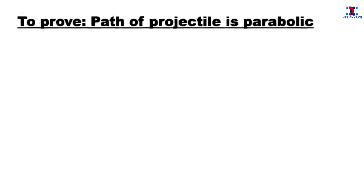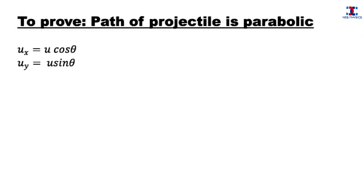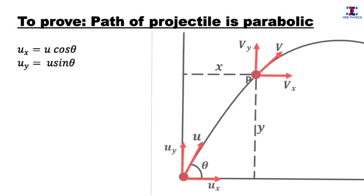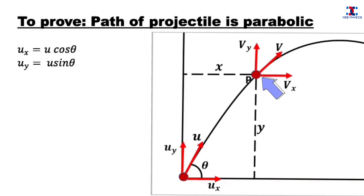Now let us prove that the path of a projectile is parabolic. We know that the horizontal component of velocity ux is equal to u cos theta and the vertical component uy is equal to u sin theta. Let us suppose that after time t the projectile reaches point P in its trajectory, where the horizontal distance covered is x and the vertical distance is y.